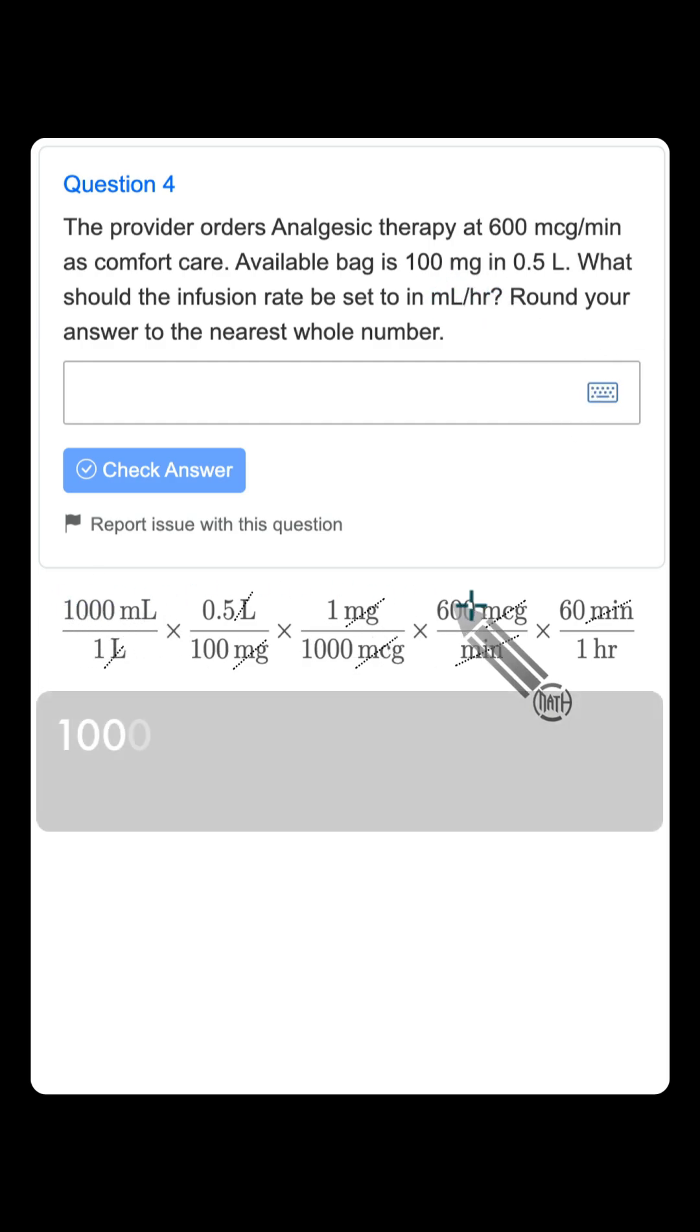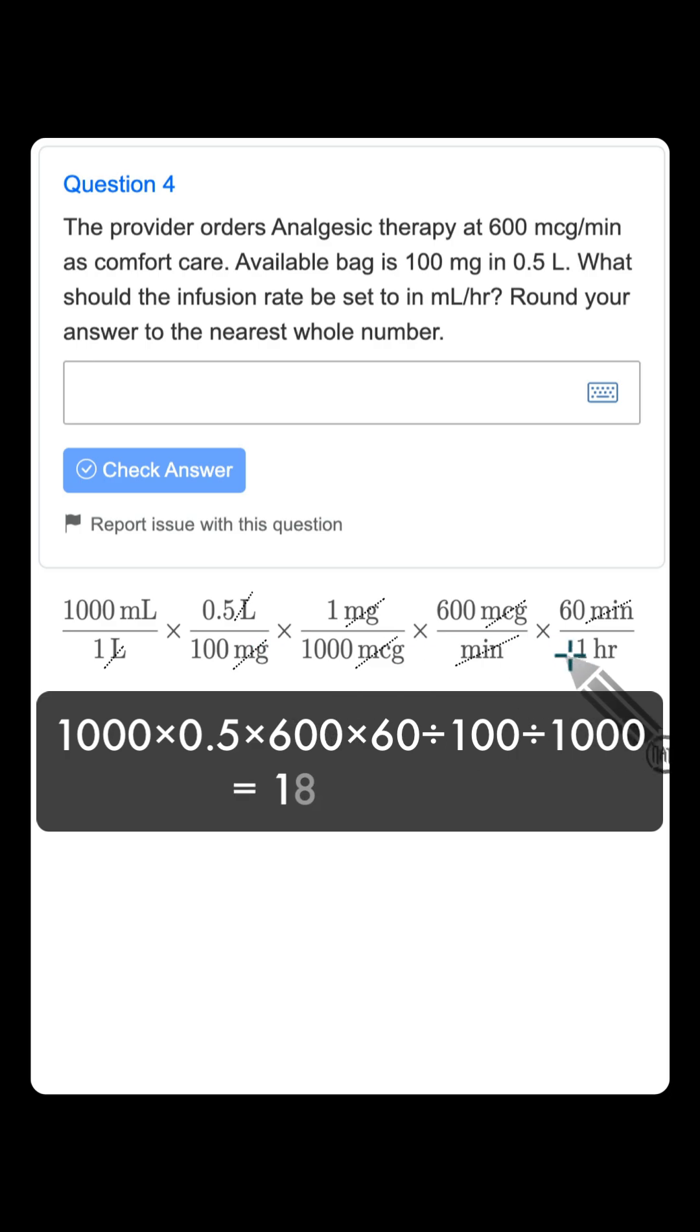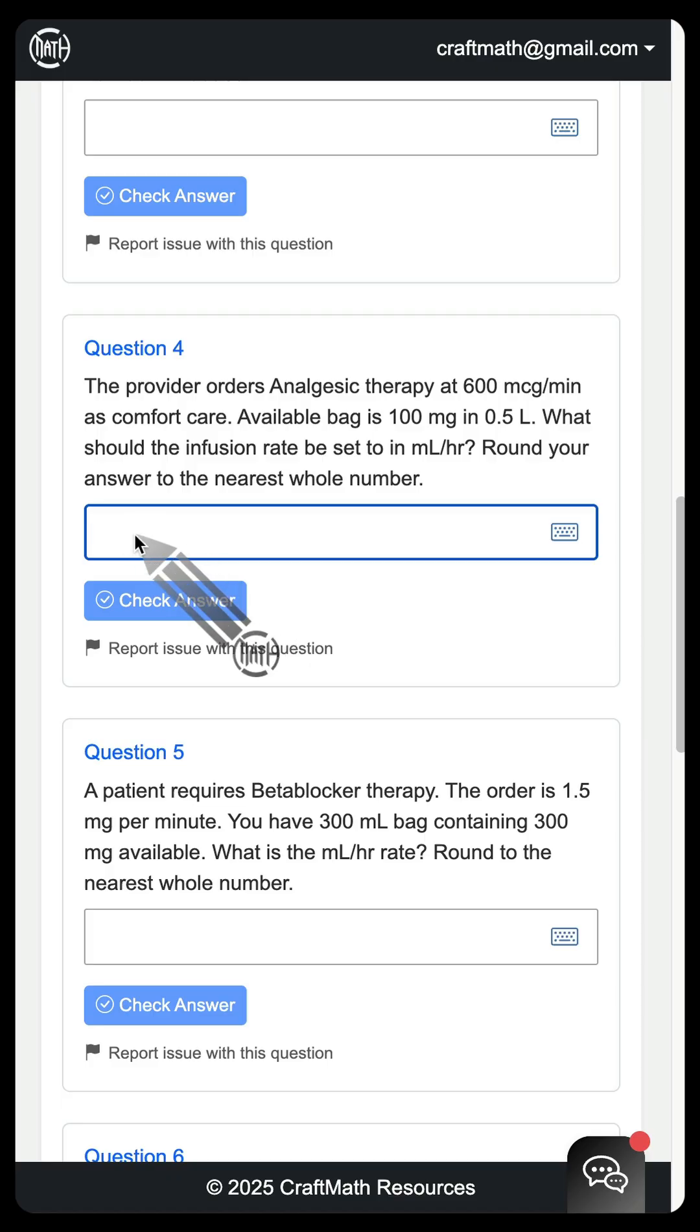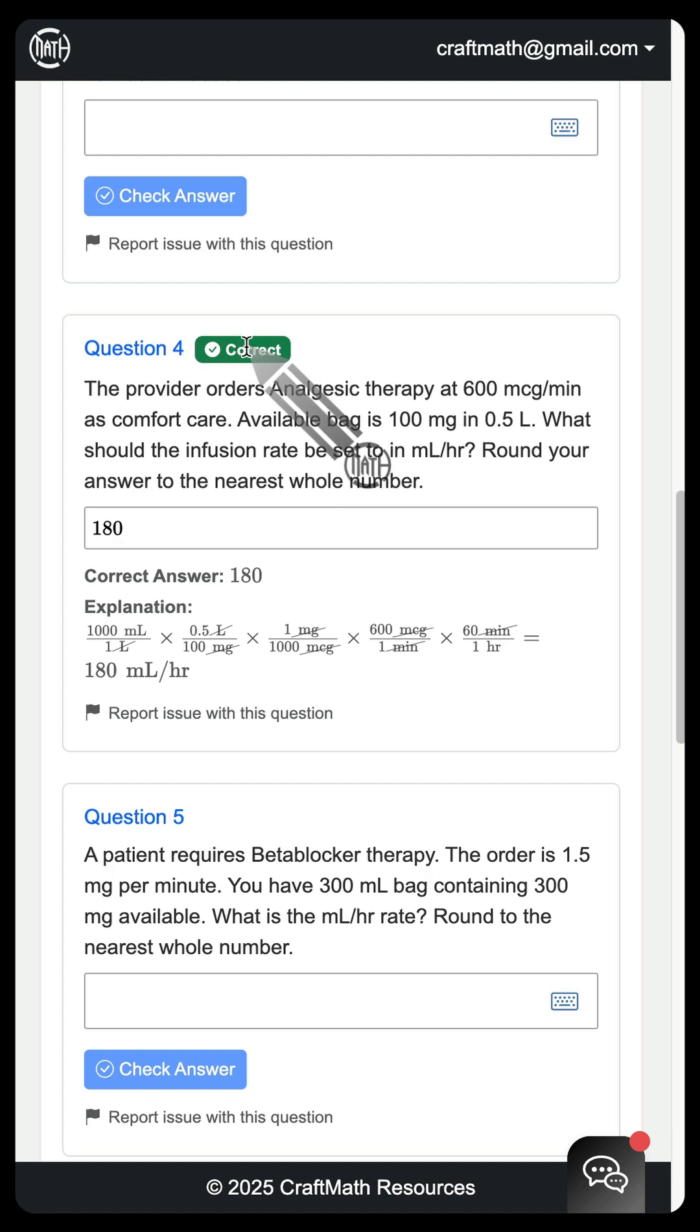So let's multiply all of our top numbers and divide by all of our bottom numbers. When you do that, your final answer will be 180 milliliters per hour. Let's head back to our question. Let's type in 180. Let's check our work. We can see that it's correct.